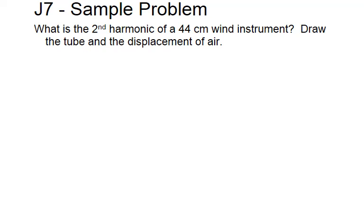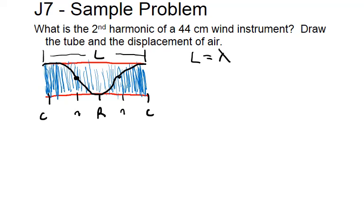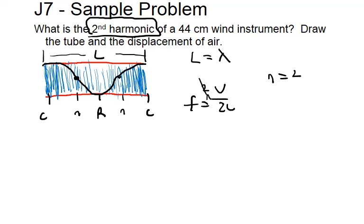For the second harmonic, we add another node and antinode. You go from compression to rarefaction, back to compression — so compression, node, rarefaction, node, compression. In this case, L is a full wavelength; L equals the wavelength for the second harmonic. Using frequency = v / 2L with n = 2, the 2s cancel and you get frequency = v / L.